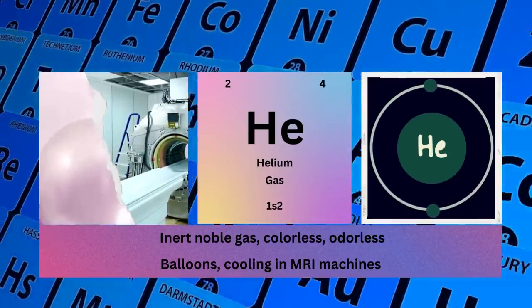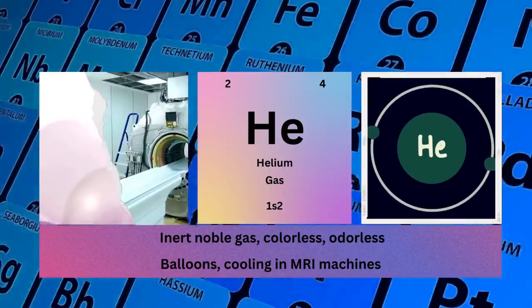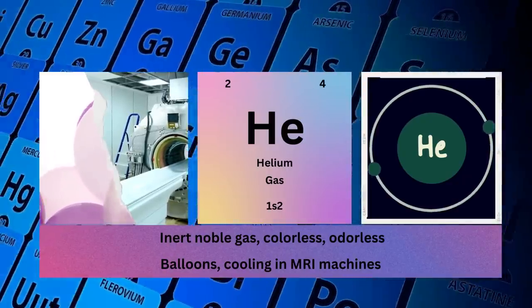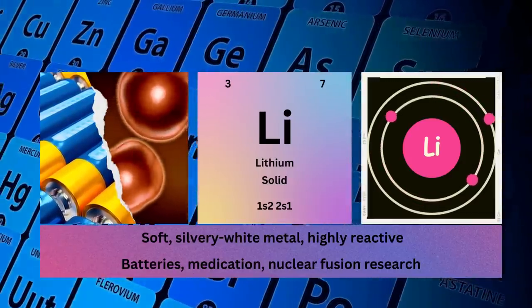Physical properties: inert noble gas, colorless, odorless. Uses: in balloons and cooling in MRI machines. Lithium: atomic number 3, mass number 7.